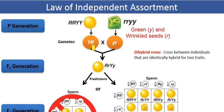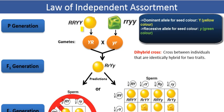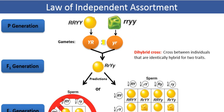In this case, the color character is represented by a capital Y for the allele for yellow color, which is the dominant allele. There are two capital Ys in that parental genotype, as you can see. And similarly, we have a small y, which represents green color, which is the recessive allele.